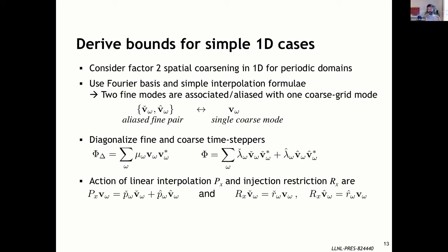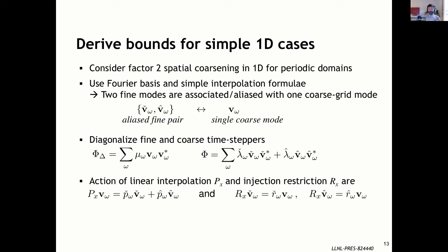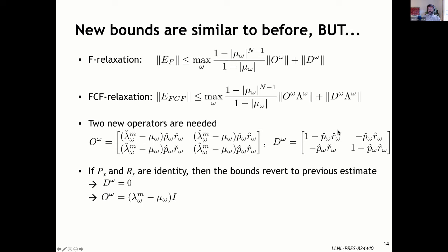Diagonalizing our time steppers as before, and making assumptions about constants R-check, R-hat, P-check, and P-hat — which denote how well interpolation and restriction map between the fine and coarse grid — we go through some algebra and get slightly different bounds. Here's the bound for F-relaxation. We have what we saw before, plus a new term O and a new term D. O looks a lot like the previous term lambda^M minus mu, but now pairing two modes together, modified by the little p and r coefficients.